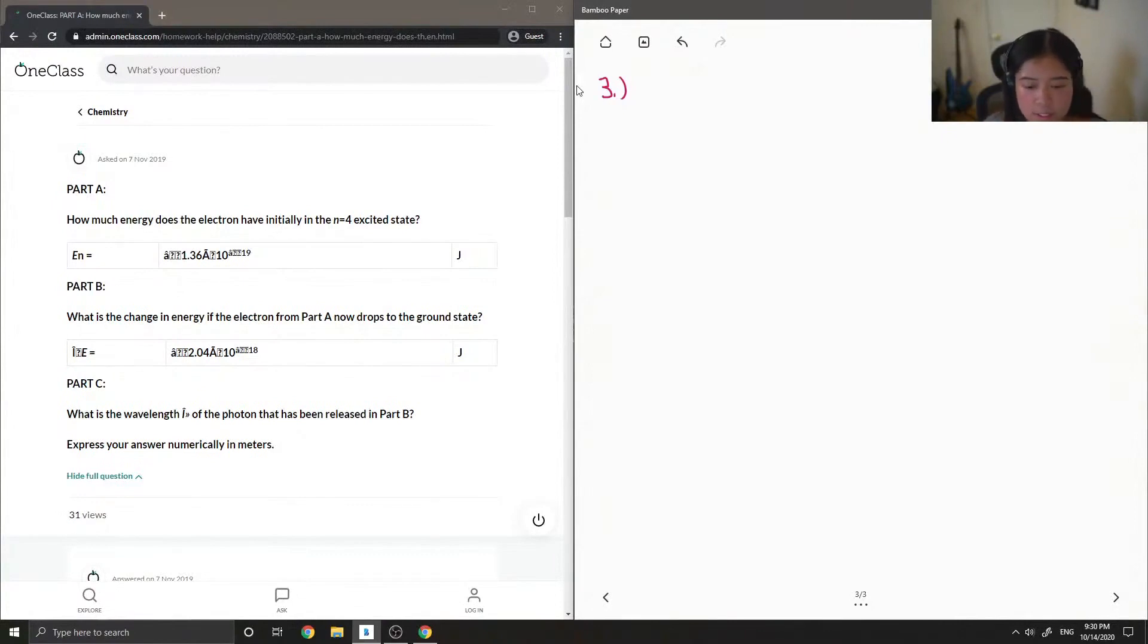what is the change in energy if the electron from part A now drops to the ground state? So again, I'll just go over how they got that answer. And then part C, what is the wavelength of the photon that has been released in part B? So I'm guessing this is the part of the question that they actually needed help with.